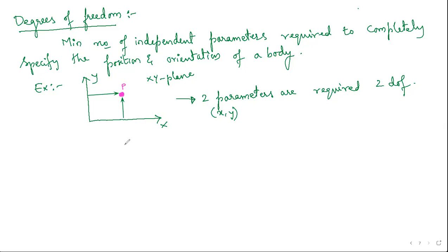We don't need the information of orientation for a point, because however the point is rotated it still looks the same. For example, if I rotate this it may become like this, or like this. So for this type of body — a point — there is no need to find orientation.